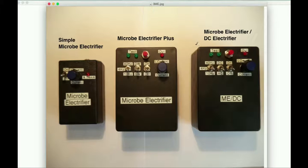Then for people that want a little bit more diversity, they can get the Microbe Electrifier DC Electrifier combo. The DC Electrifier is the best at fighting localized bacterial infections. Examples would be like a dental infection, a kidney infection, a bladder infection, toenail fungus, things like that.